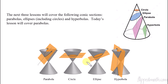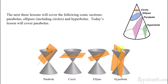It creates a parabola if you slice it that direction. If you slice it parallel to the base, it would be a circle. A little bit of an angle would be an ellipse. And then a hyperbola is actually straight up and down, perpendicular to the base. A hyperbola has two different branches to it, not just the one.